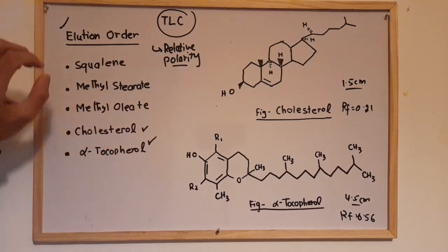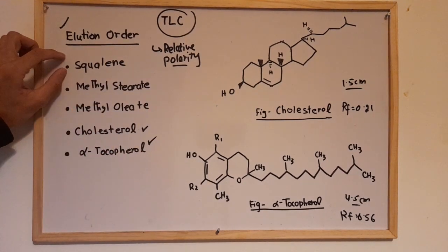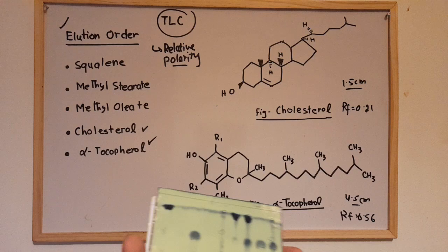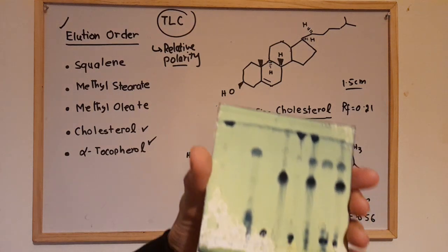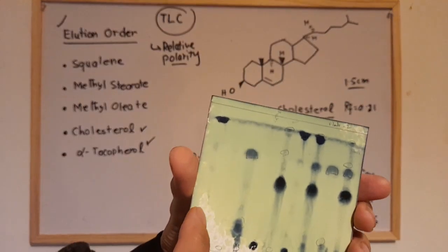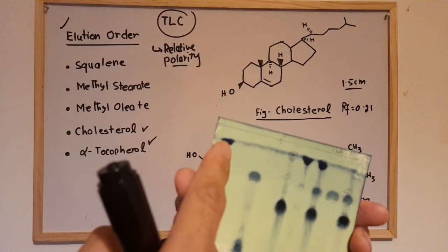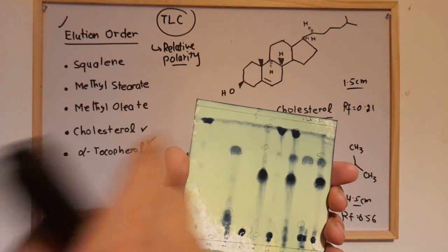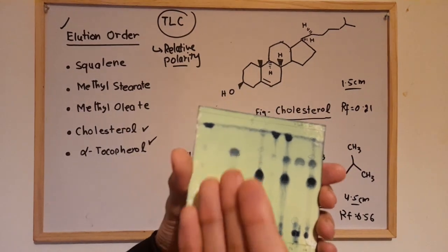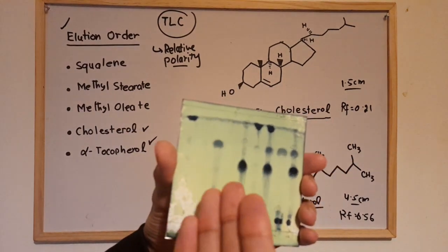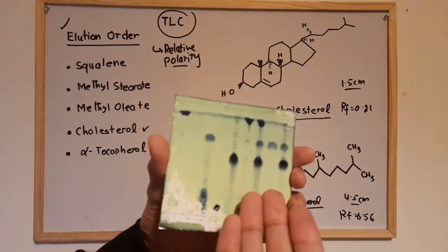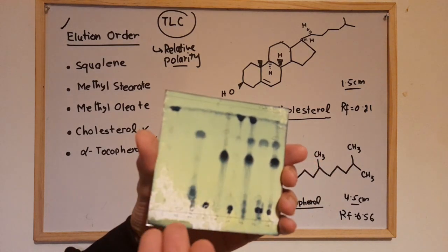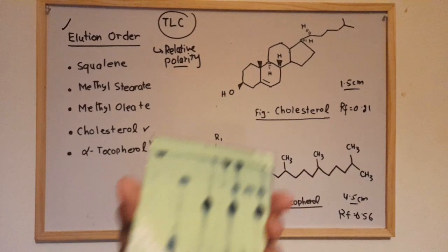Among these compounds, squalene is mostly non-polar. Because it is non-polar and the stationary phase is polar, squalene does not interact with the stationary phase and moves along with the solvent all the way to the top — so it elutes first.